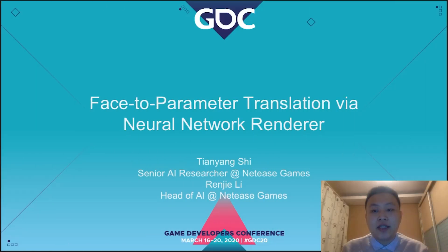Hi everybody, I'm Tianyang Shi from Fuxi AI Lab. In this talk, I would like to share a new technology named Phase-to-Parameter Translation, which can help players create their character with a single photo. This technology can be used in games with a character customization system.